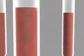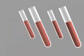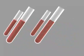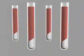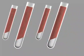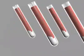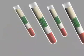Invert gently 8 to 10 times. Incubate at room temperature for 20 minutes, then continue to isolate the PBMC fraction using FICOL density gradient centrifugation.